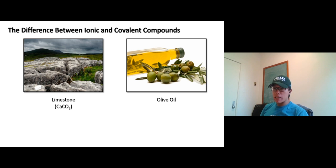This leads to many unique physical properties, and they actually have different properties. For example, right here we have limestone. This is an example of ionic compounds called calcium carbonate. And we have olive oil as an example of a covalent compound.